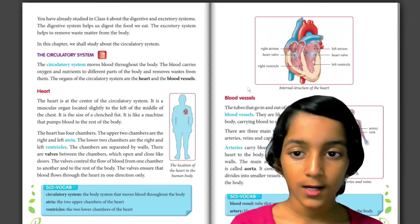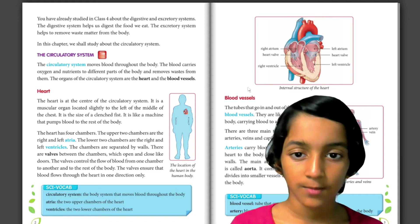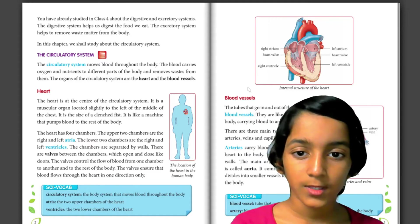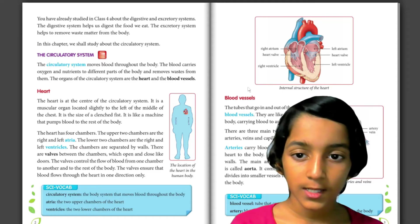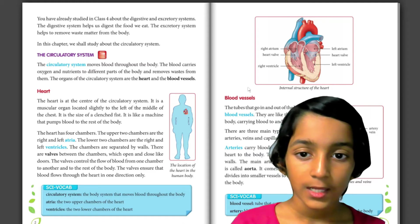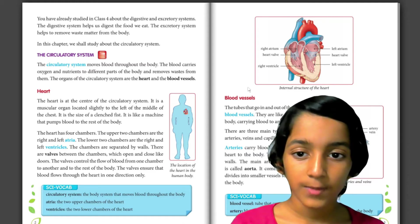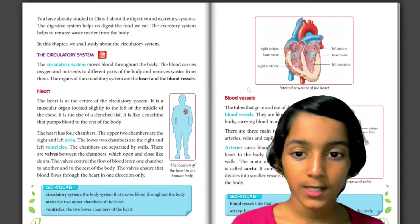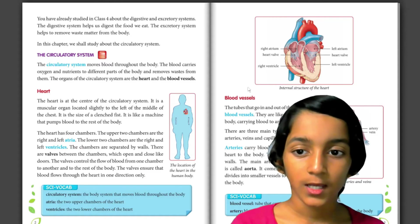The heart is at the center of the circulatory system. It is a muscular organ located slightly to the left of the middle of the chest. It is the size of a closed fist. It is like a machine that pumps blood to the rest of the body. The heart has four chambers.